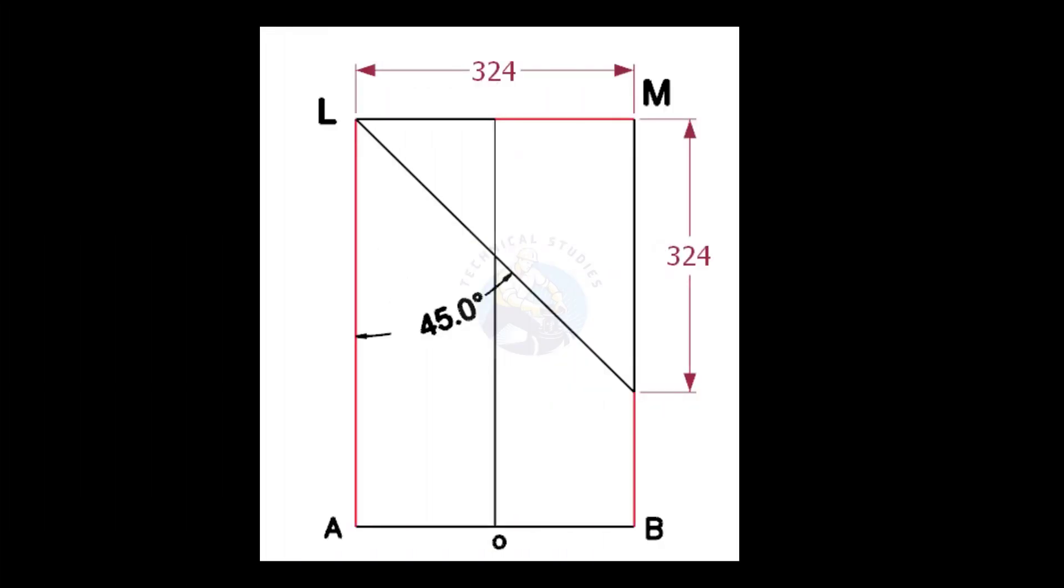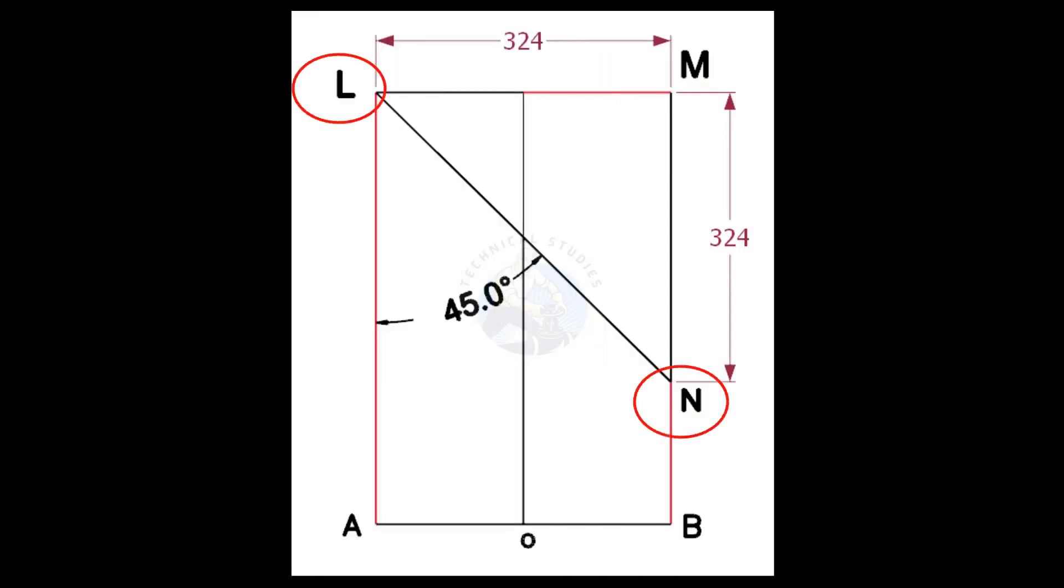Draw the lines AL and BM. Since the included angle is 45 degrees, the cutback is same as the pipe OD. Draw the line LN.